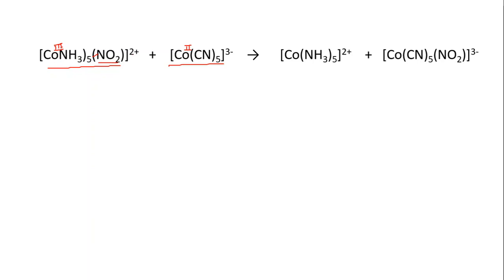And the oxidation state of this cobalt that is in the nitro complex is +3. Now an electron transfer is occurring from cobalt(II) to cobalt(III).